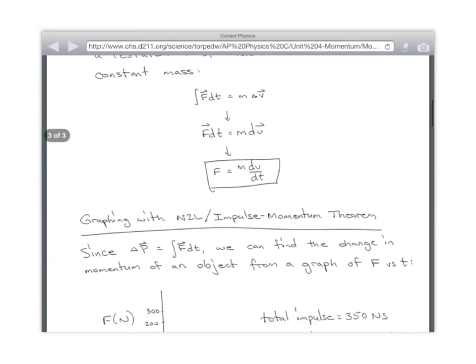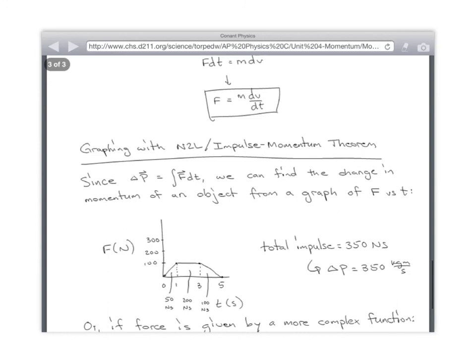Since change in momentum is equal to impulse, and impulse is just the area under a force and time graph, F dt, integral of F dt, we can find the change in momentum of an object if we have a force and time graph. Let's say you had a changing force, and the force started at zero at zero seconds, goes up to 100 newtons at one second, stays at 100 newtons until three seconds, and then at five seconds it drops back down to zero again. So that would be a force that pushes harder, harder, harder, constant, constant, constant, and then weaker, weaker, weaker until you're at zero.